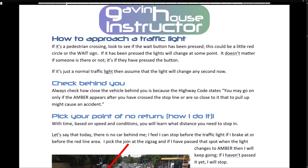When approaching a traffic light: if it's a pedestrian crossing, look to see if the wait button has been pressed — this could be a little red circle or the wait sign. If it has been pressed the lights will change at some point; it doesn't matter if someone is there or not, it's whether they have pressed the button. If it's just a normal traffic light, assume that the light will change any second. Always check how close the vehicle behind you is, because the Highway Code states you may go on only if the amber appears after you have crossed the stop line or are so close to it that to pull up might cause an accident.